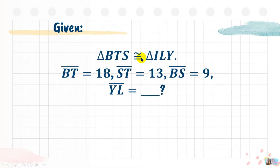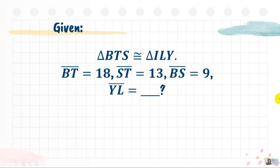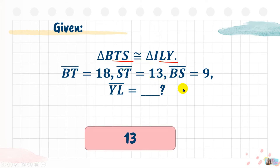Next, we have the congruence statement: triangle BTS is congruent to triangle ILY. Using this congruence statement, we can determine which parts are corresponding congruent parts. Side BT is 18, side ST is 13, and side BS equals 9. What will be the measurement of side YL? Looking carefully at the congruence statement, YL corresponds to ST. The measurement of ST is 13, so side YL equals 13.